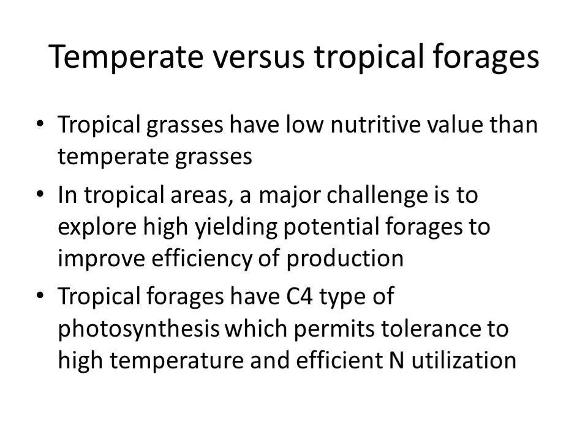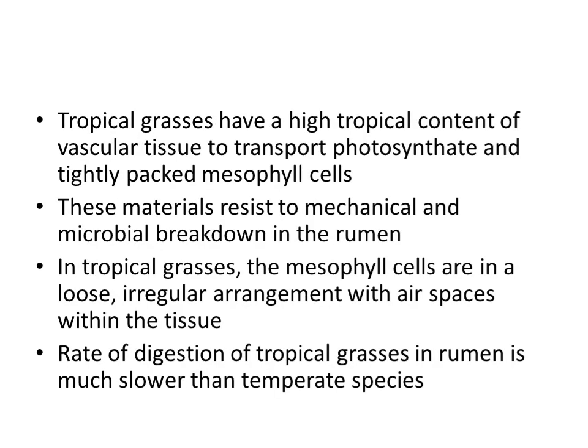Tropical grasses have lower nutritive value than temperate grasses. In tropical grasses, a major challenge is to exploit high-yielding potential forage to improve efficiency of production. Tropical forages have a C4 type of photosynthesis, which permits tolerance to high temperature and efficient nitrogen utilization. Tropical grasses have a high content of vascular tissue to transport photosynthates, and tightly packed mesophyll cells that resist mechanical and microbial breakdown.